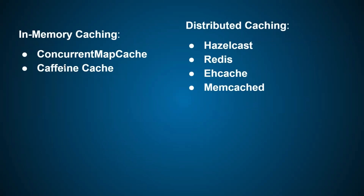There are different types of in-memory caches. First is ConcurrentMap cache — it's very simple but does not provide many facilities; it works like a hash map. The next one is Caffeine cache, which is a library that provides a lot of features like deleting the cache or expiring the cache after a particular time. In many projects you will see Caffeine cache, and it is widely used in applications.